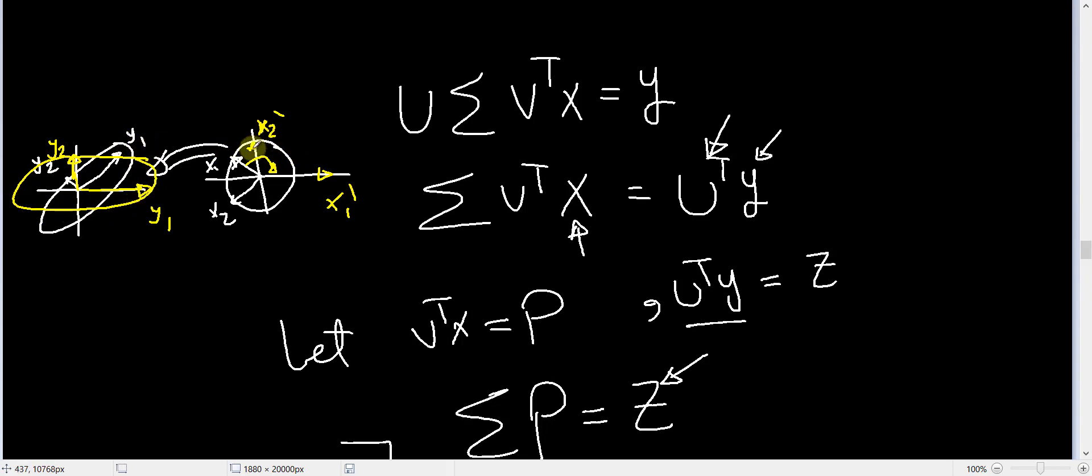And in this space, in this rotated space for the vector X and for the vector Y, the relation between the vectors is diagonal. Here this is X₁ dash, which is equal to P₁. Here we have X₂ dash, which is the same as P₂.